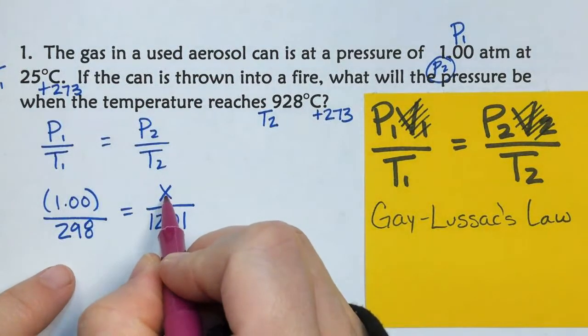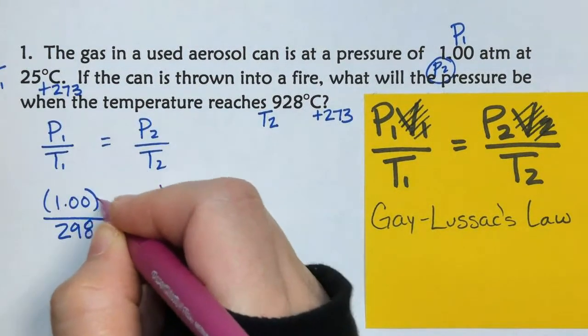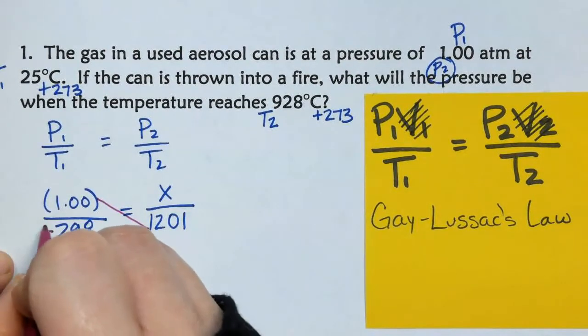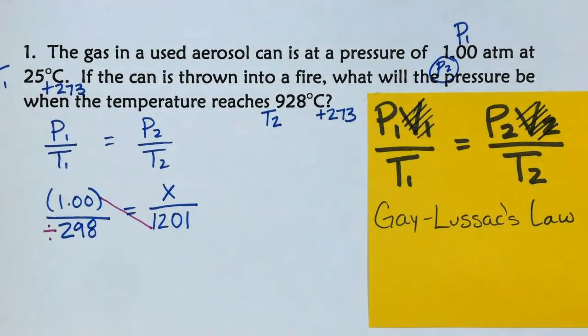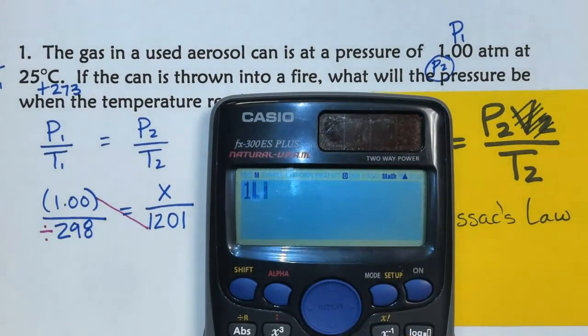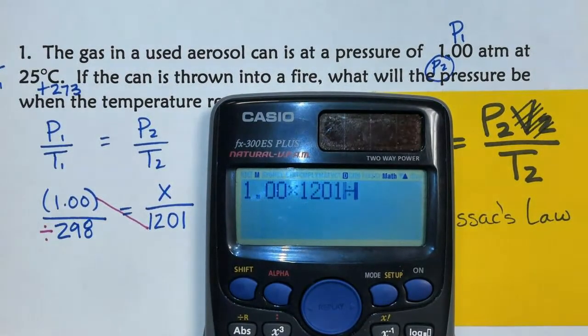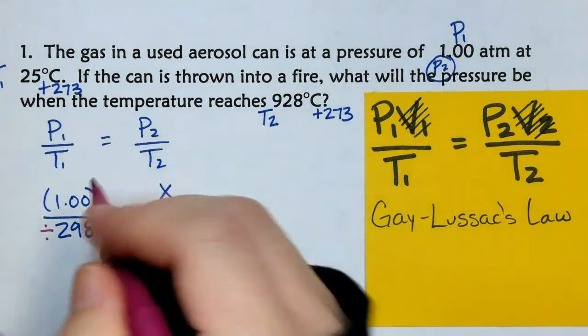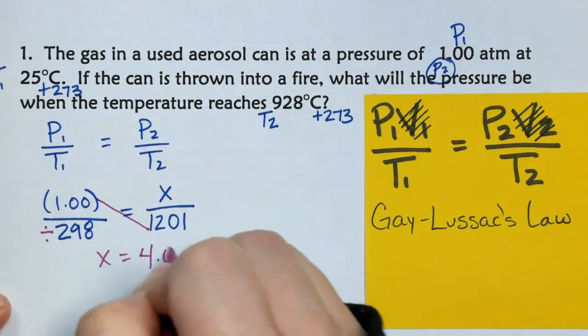We don't start our cross at the X, we start opposite the X, so it's going to be this times this, and then divided by this. So, we're going to do 1 times 1201 divided by 298, and that's going to give us 4.03.